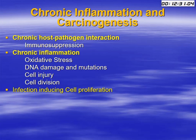Regarding chronic inflammation and carcinogenesis, it's a big story, and it can cause cancers via three main arms. The first is chronic host-pathogen interaction, which eventually leads to immunosuppression. The second is the state of oxidative stress induced by chronic inflammation, which leads to DNA damage and mutation, cell injury, and promotion of cell division. The third is infection-induced cell proliferation.